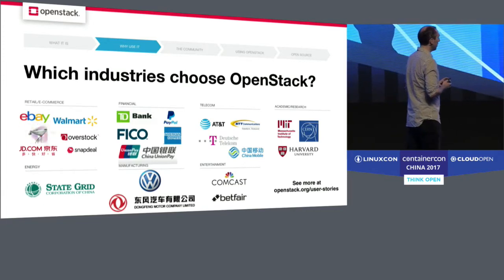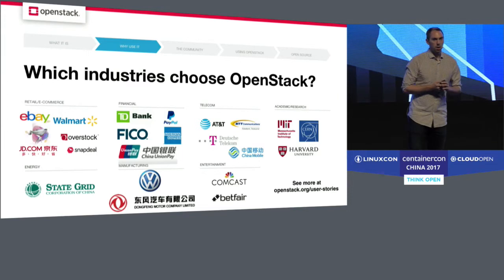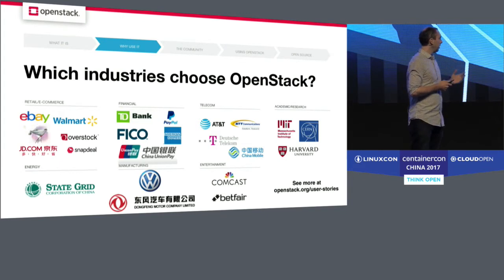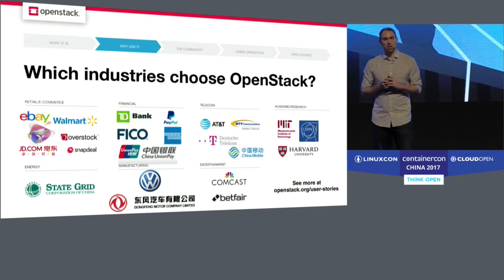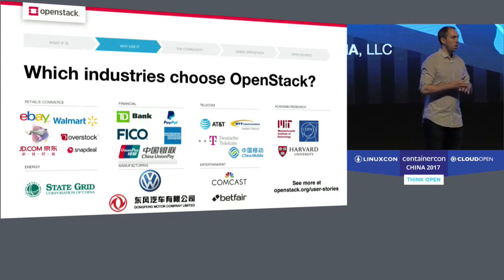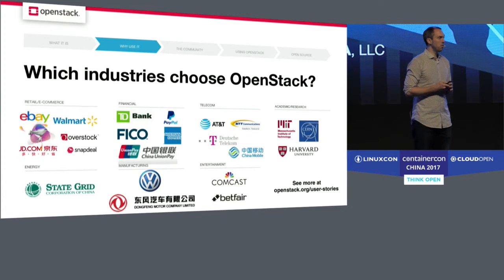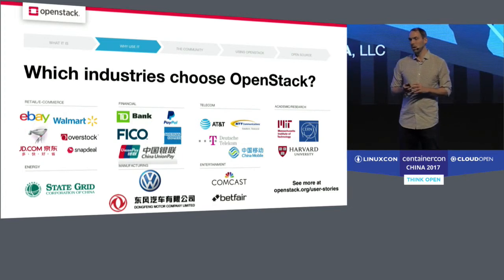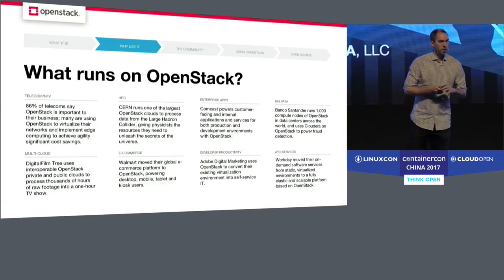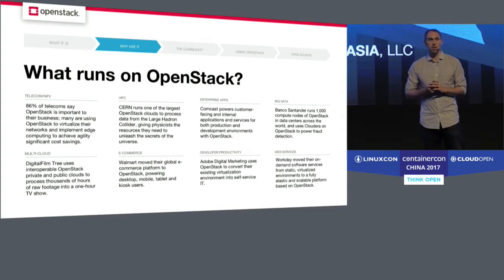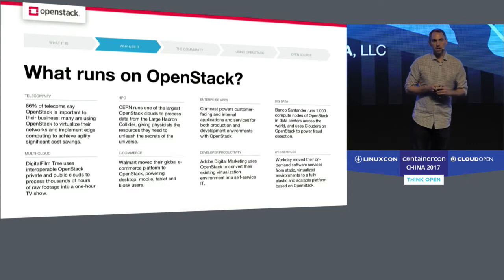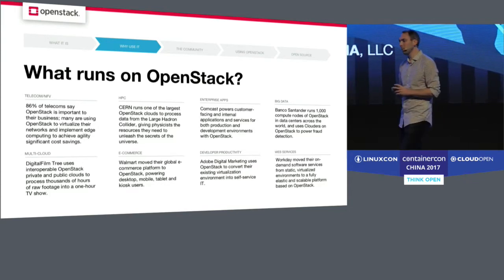So who's using OpenStack in these ways? A lot of companies across many, many industries. You'll notice some leading companies from China up here as well, like China UnionPay, StateGrid, JD.com, Dongfeng Motors, and others. All over the world, we have OpenStack users using it for all kinds of use cases. If you go to our website at OpenStack.org/users, you can find lots of examples of what people are doing with it and how they're using OpenStack to build clouds in their businesses.